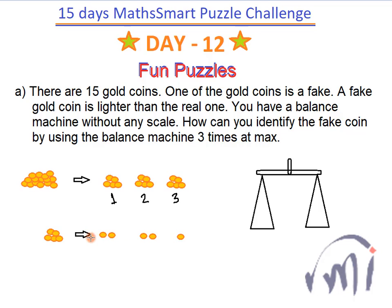If one of the two-coin groups is lighter, that group contains the fake coin. Take that group and place one coin on each side of the balance — the lighter one is the fake coin. In this way, you use the balance machine only three times in total and successfully identify the fake coin.